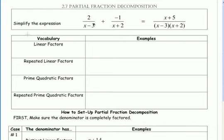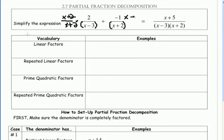I want to add two rational expressions. To do that, the first thing I would do is factor the denominators, but the denominators here are prime — they don't factor anymore. Because these two denominators don't have any factors in common, I can just multiply by the other's denominator to get a common denominator. I'll multiply by x plus 2 over x plus 2 on the left, and x minus 3 over x minus 3 on the right. So my common denominator would be x plus 2 times x minus 3 — reversed here, but that's okay because multiplication is commutative.